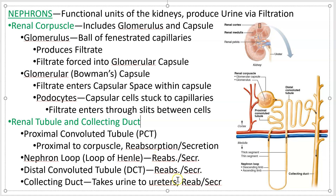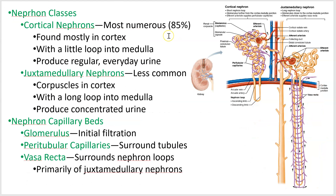The tubule includes everything else: the proximal convoluted tubule, the nephron loop, the distal convoluted tubule, and the collecting duct. The other two processes in urine production are reabsorption and secretion. So first there's filtration, then reabsorption and secretion — I'll talk about those in the next screencast. Right now we're just looking at the nephron. Let's look at the two different types. The vast majority are called cortical nephrons, which have most of their structures in the cortex.